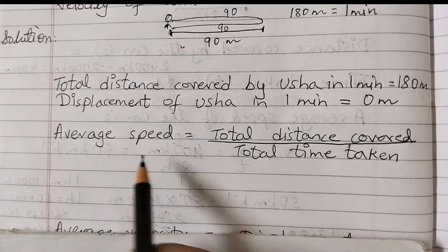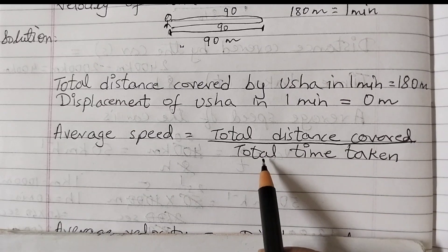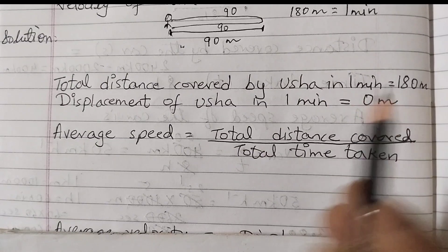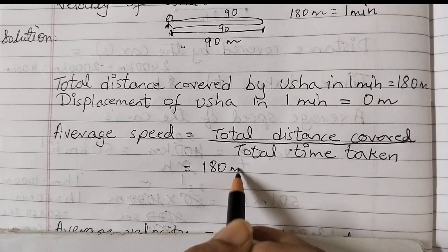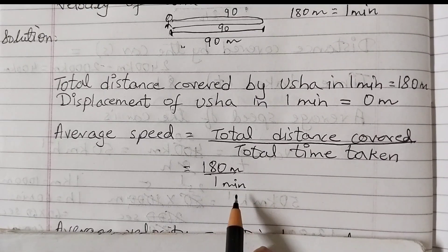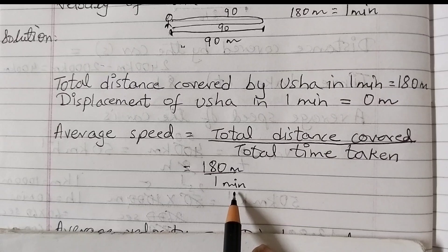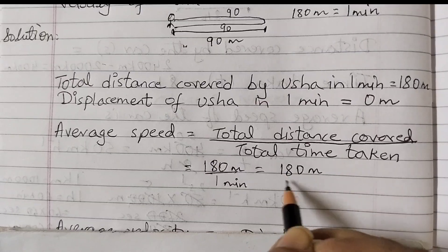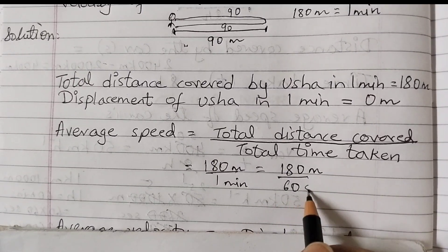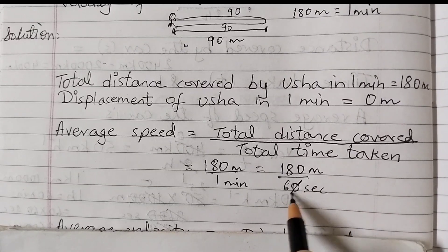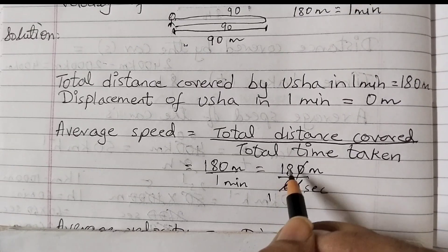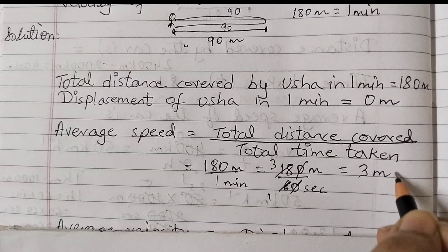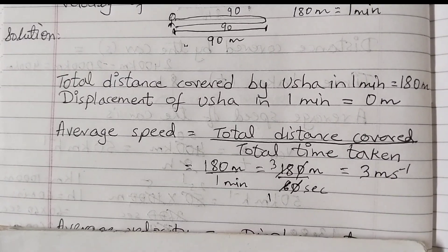Average speed equals total distance covered divided by total time taken. Distance covered is 180 meters, time taken is one minute. The unit should be meters per second, so one minute is converted to 60 seconds: 180 meters divided by 60 seconds. Cancelling zeros gives 18 divided by 6, which equals 3 meters per second. It's very important to write the proper unit.